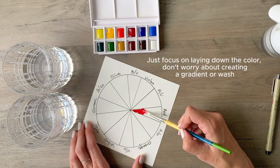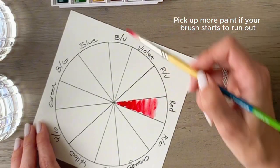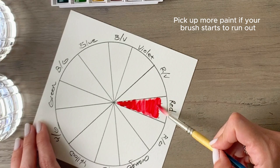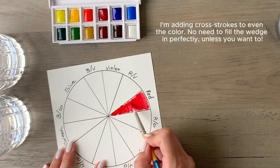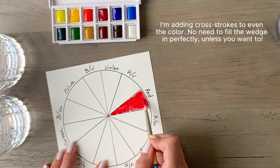And then you're going to paint that into the wedge of your circle. Don't worry about creating a wash or a gradient here or brush strokes or anything like that. This is strictly about laying down color so that you've got a reference guide for your personal palette.